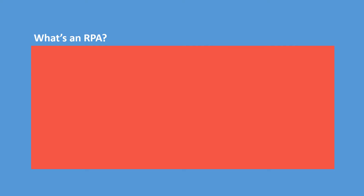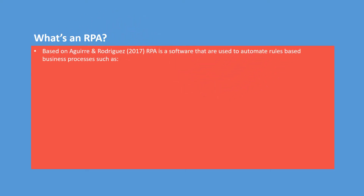Maybe now you're thinking, what's an RPA? Based on Aguirre and Rodriguez, RPA is a software that is used to automate rule-based business processes such as repetitive tasks, structured data, and deterministic outcomes.